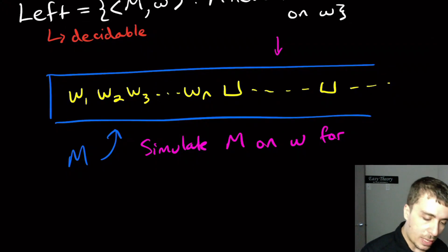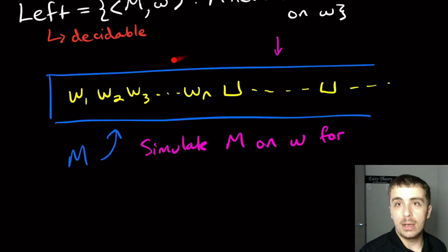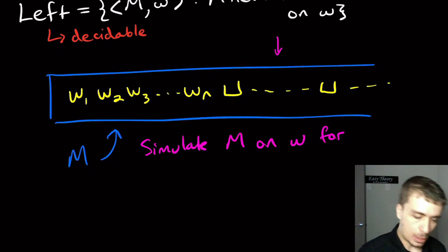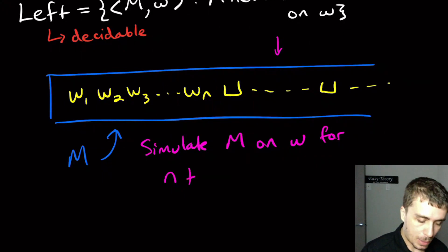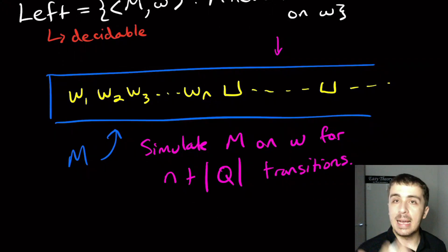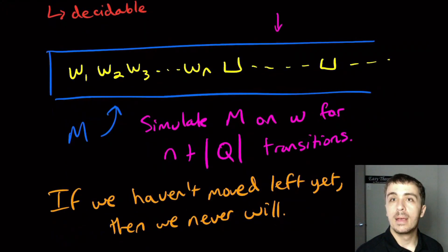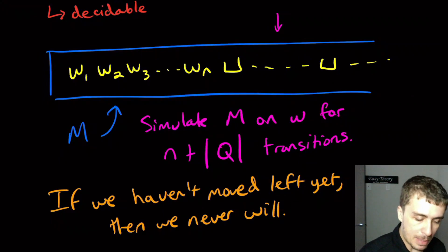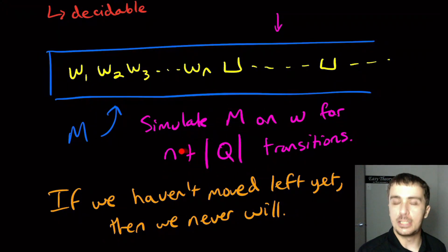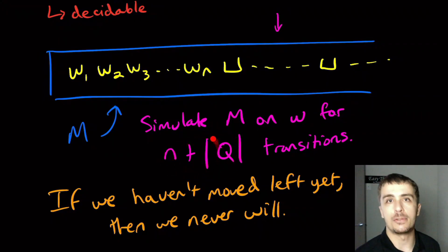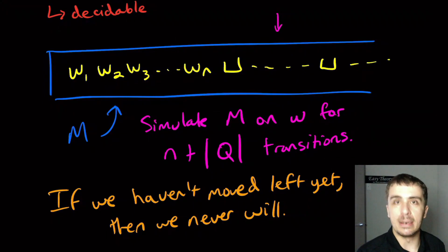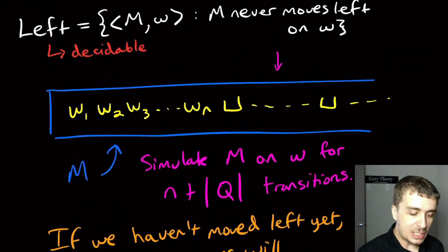All we need to do is simulate M on W for N plus the number of states transitions — where N is the length of the input string. At that point, if we've never moved left, we know we never will. That's an algorithm because the input and Turing machine are both finite. We can use a universal Turing machine or multiple tapes to track the counter, simulating the original machine. So LEFT is decidable.